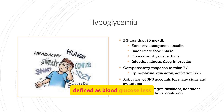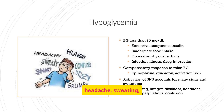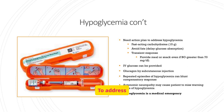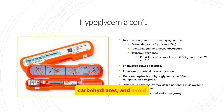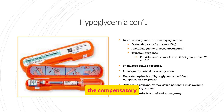Hypoglycemia, defined as blood glucose less than 70 mg/dL, can be caused by excessive insulin, inadequate food intake, or excessive physical activity. Symptoms include headache, sweating, shakiness, hunger, confusion, and dizziness. To address hypoglycemia, have an action plan, consume fast-acting carbohydrates, and avoid fats. IV glucose or glucagon can be administered in severe cases. Repeated episodes can blunt the compensatory response, and autonomic neuropathy may mask warning signs.